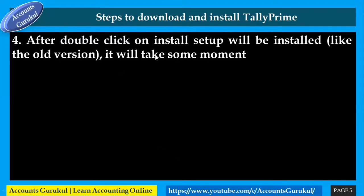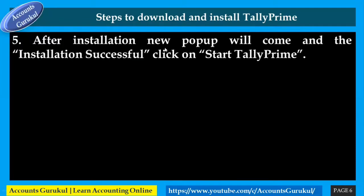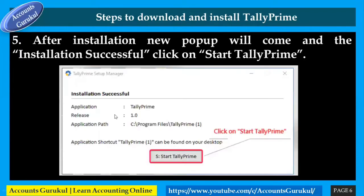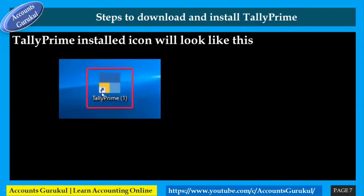After double-clicking on install, the setup will be installed similar to the old version - it will take some time. After installation, a new pop-up will come and say installation successful. Click on 'Start Tally Prime'. Once the installation is successfully done, the system will show 'Start Tally Prime'. The installed Tally Prime icon will appear on your desktop.